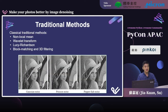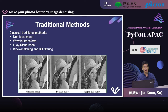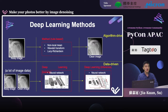In the past, some traditional methods were used for image denoising, like non-local mean or wavelet transform. The limitations of these methods are that they assume the noise follows some kind of statistical distribution, like Gaussian or Poisson distribution, and they use robust algorithms to remove such noises. To overcome the limitations of traditional methods, we can try to use deep learning methods — the techniques behind today's modern AI.